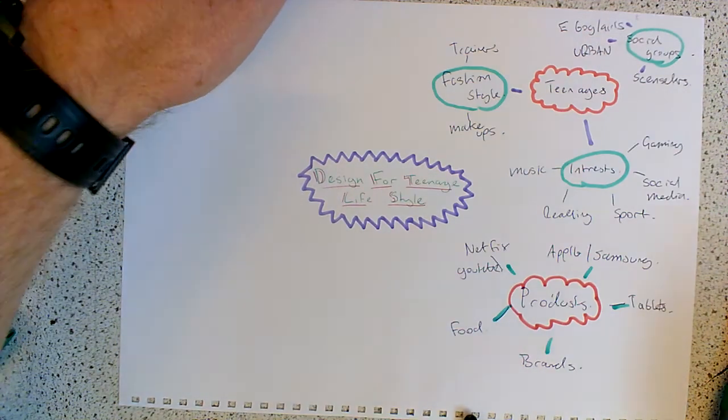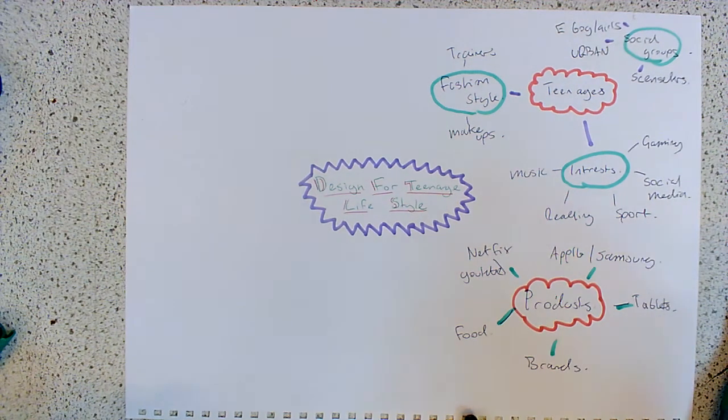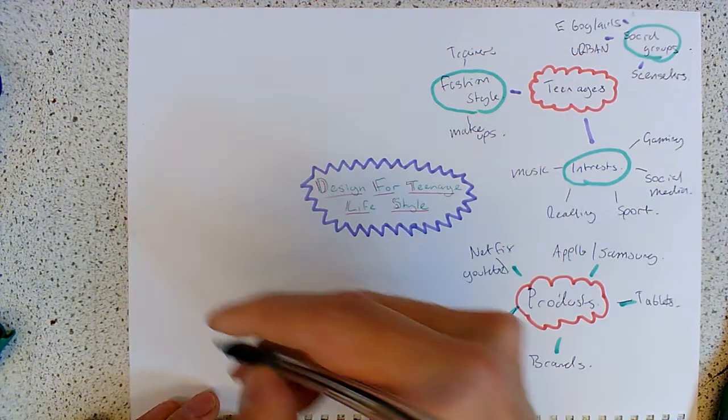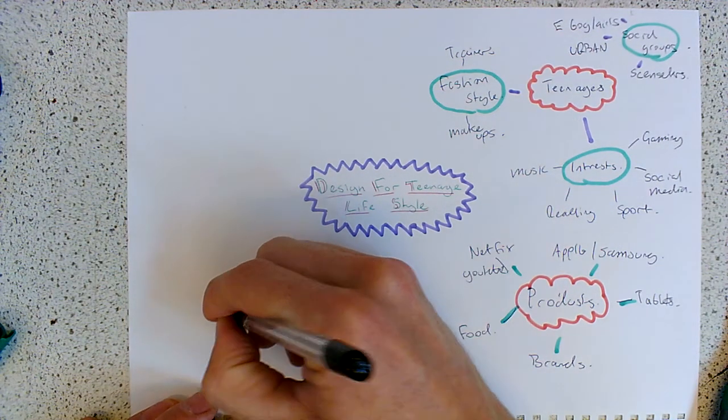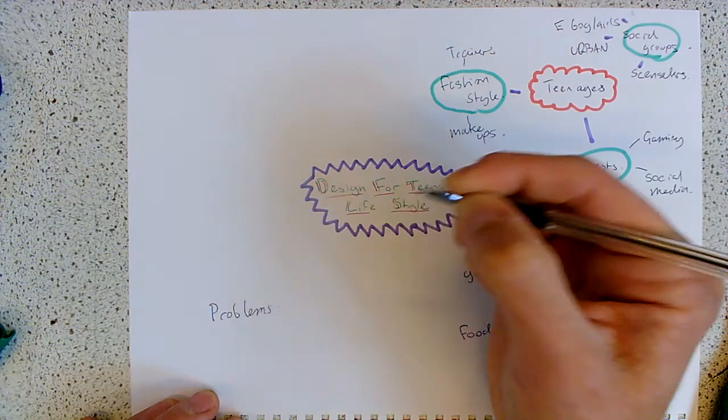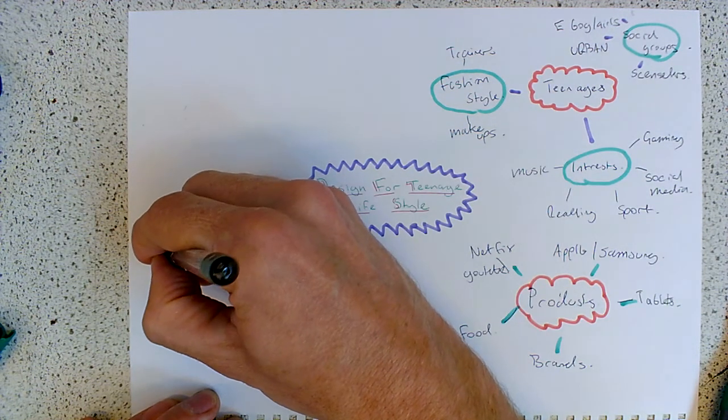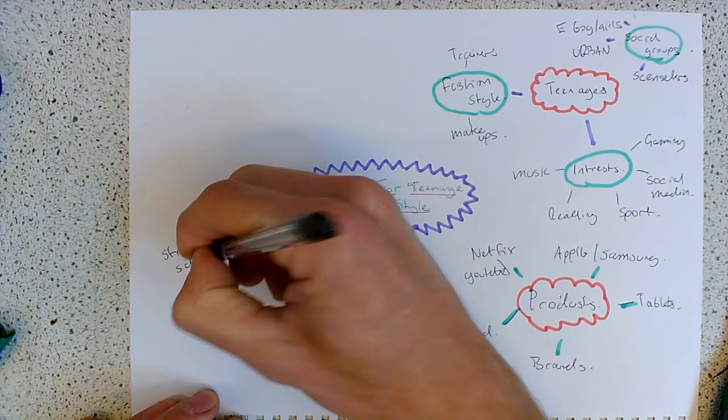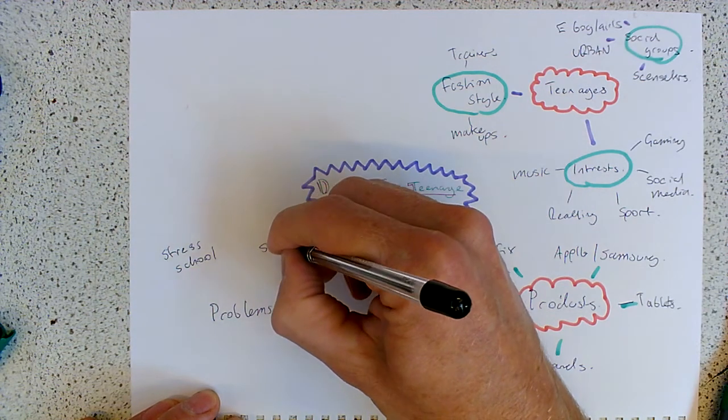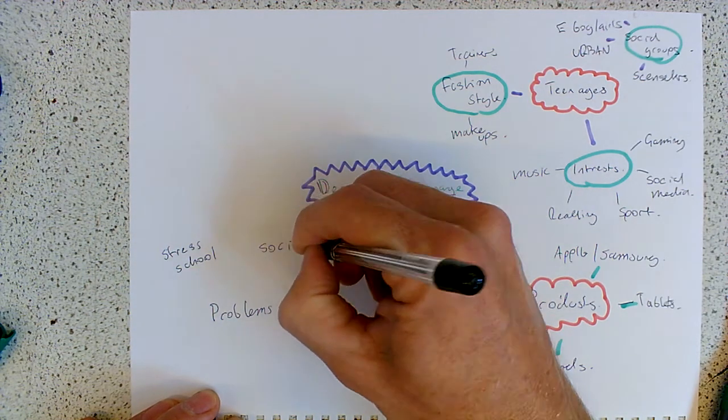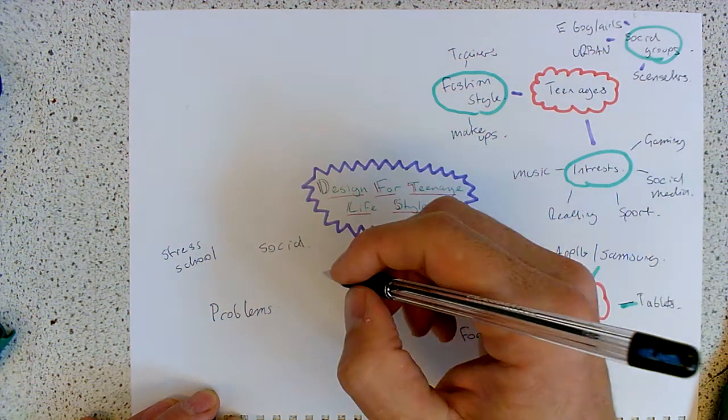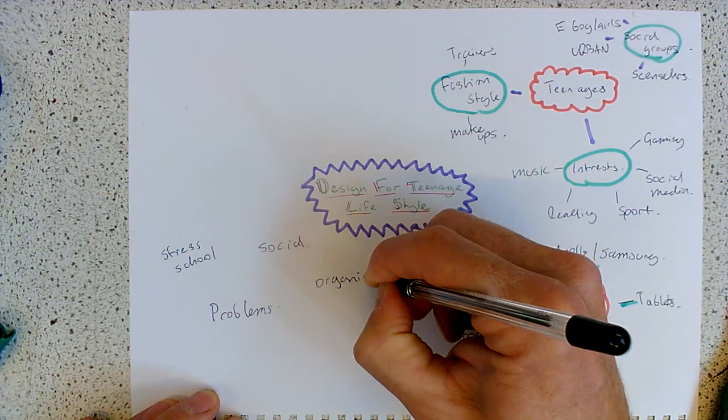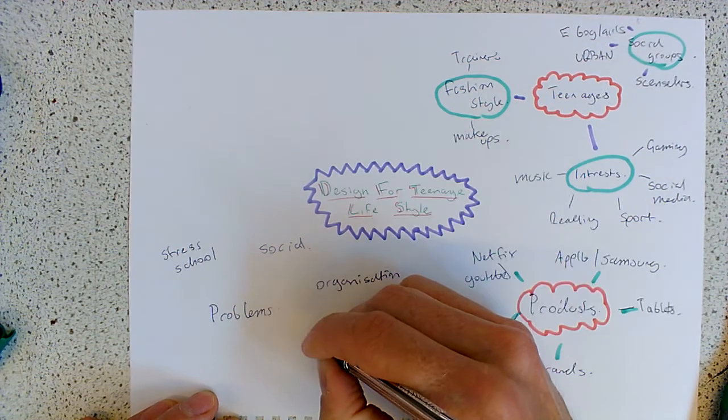The next thing that we're going to look at is perhaps the problems that young people face. So what are the problems that need solving? It could be stress from school. It could be to do with social issues and interaction. It could be about organization, getting enough sleep.